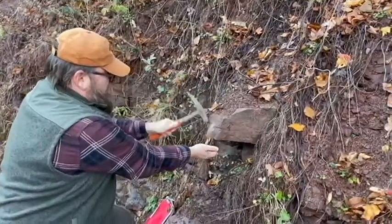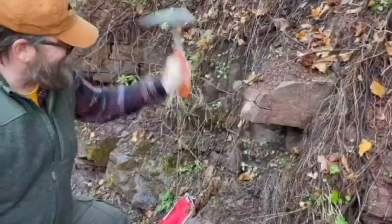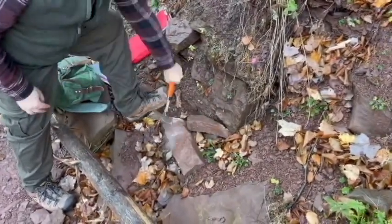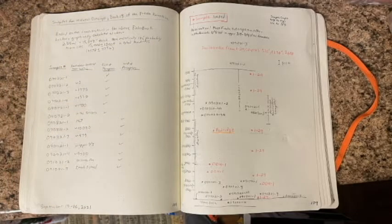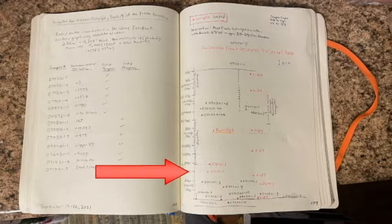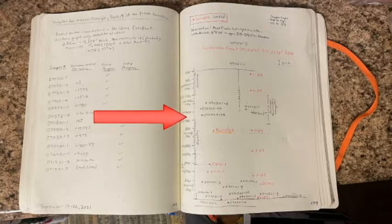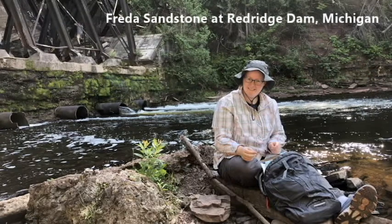You have seen me pull detrital zircons from the field before, so I'm not going to talk too much about that. Now let's get into why I picked Marble Point. I need more sample from the top of the Frida. Looking at my working lab notes, there's not a lot of stuff from the top and middle of the formation. We have a ton of samples from the bottom and lower middle — that's the best-exposed part of the Frida. But the top and middle is a big, huge gap.